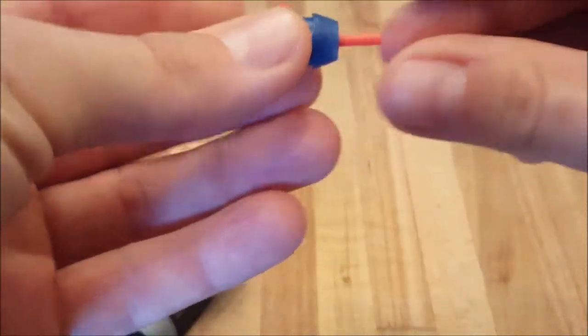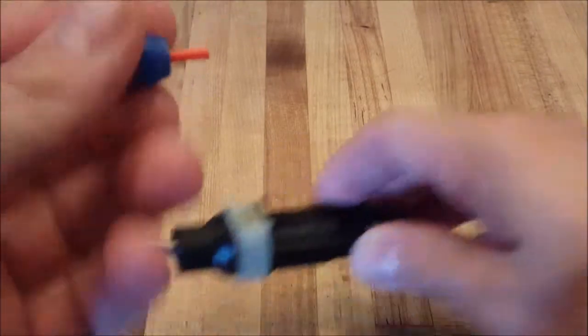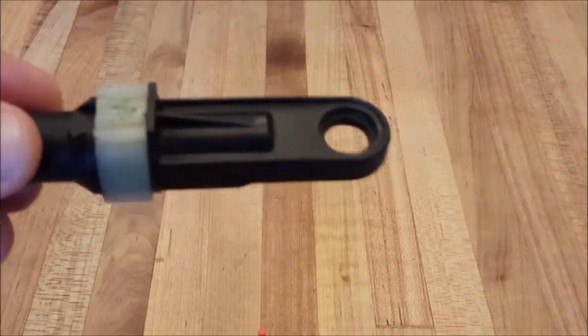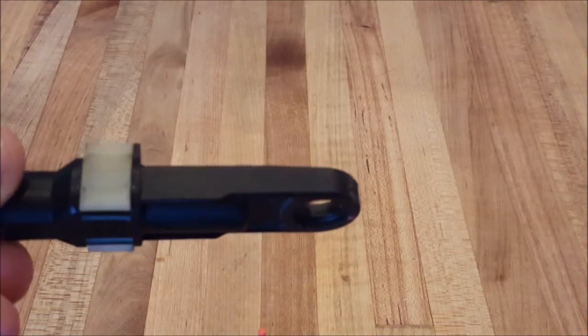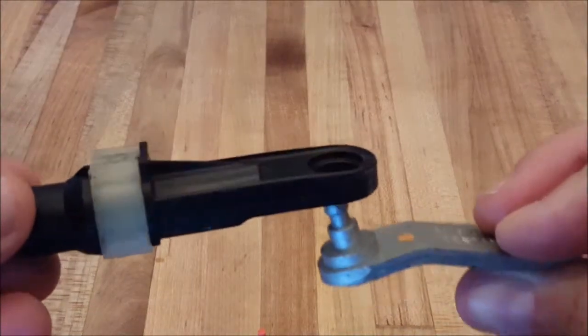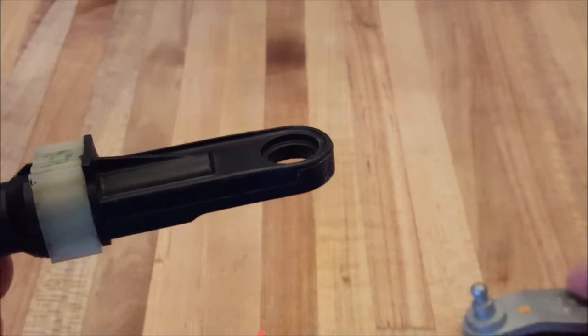You'll start by putting the bushing onto the installation driver as shown. Then look at your cable end and identify which way the shift lever pin went through. You'll want to place the bushing and installer in the same direction.